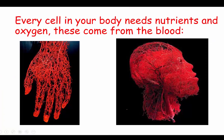The point of the circulatory system is that every cell in your body needs nutrients and oxygen, and these come from the blood. The reason why there are so many blood vessels is because basically every cell in your body needs a constant supply of glucose and oxygen — and if they don't get them they can die within a few minutes. That's basically what happens in a heart attack and stroke, and that's why they can be so dangerous.